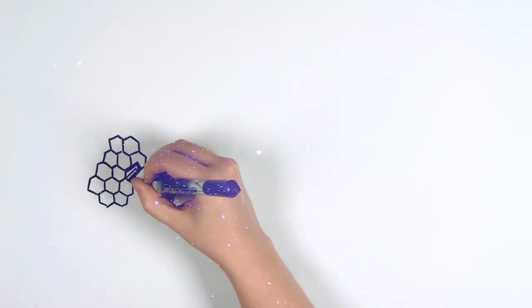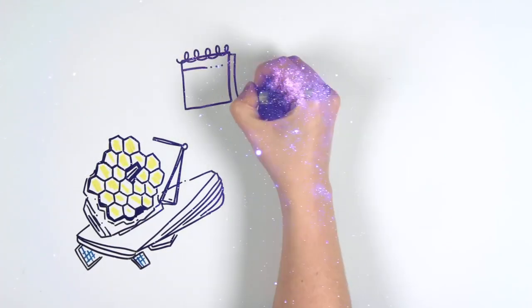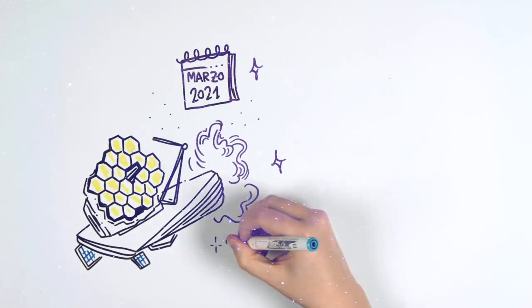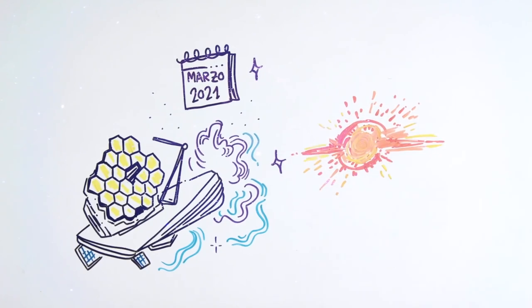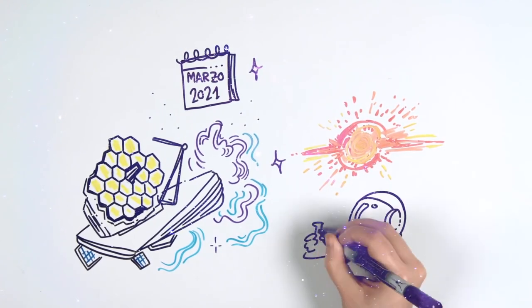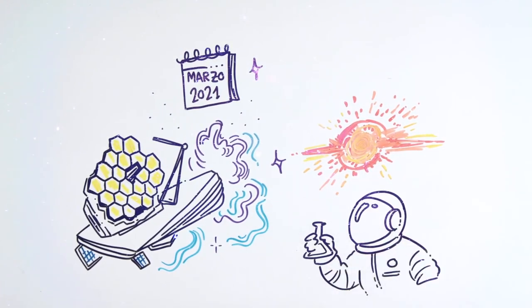The James Webb Space Telescope will leave for space in March 2021. This telescope, unlike Hubble, will look for the first galaxies that formed after the Big Bang. Scientists will then study the physical and chemical properties of objects far out in the universe.